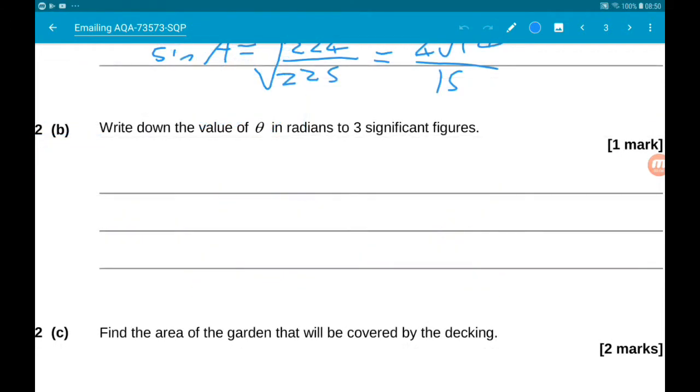Okay, next for one mark, they want us to write down the value of theta in radians to 3 sig figs. Now it's a bit misleading here. Usually when the questions say write down, the answer is staring at us in the face, especially when it's only for 1 mark.